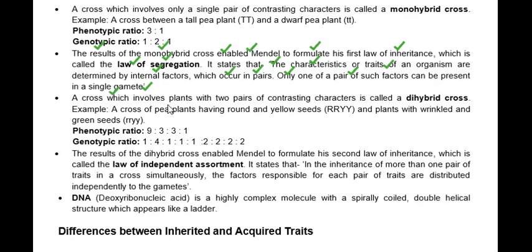A cross which involves plants with two pairs of contrasting characters is called the dihybrid cross. In the dihybrid cross, we have two traits together — for example, a cross of a pea plant having round and yellow seeds with plants having wrinkled and green seeds. Its phenotypic ratio is 9:3:3:1 and its genotypic ratio is 1:4:1:1:2:2:2.